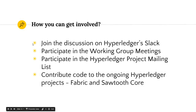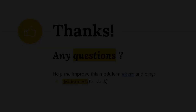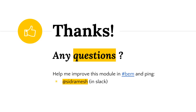How can you get involved with Hyperledger? The best thing to do is join the discussion on Hyperledger's Slack channel. You could also participate in working group meetings where different groups discuss issues and use cases regarding blockchain. You could also join Hyperledger's mailing list. The best option is to contribute code to the ongoing Hyperledger projects — that is, the Fabric and Sawtooth Core. Thank you for tuning in. If you have any questions, you can reach me on Slack at Sid Ramesh.